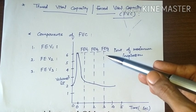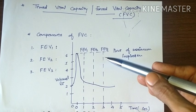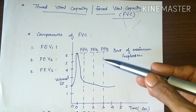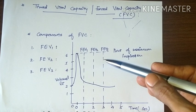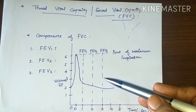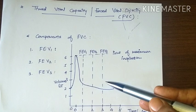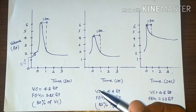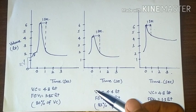FEV3, that is forced expiratory volume in 3 seconds, is the volume of air which is expired in the first 3 seconds, and it is about 98 to 100%. What is the clinical application of forced vital capacity?